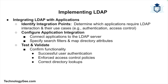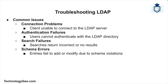After setting up the client, integrate LDAP with your applications. Determine which applications need to interact with the LDAP directory and how they will use the directory information — common use cases include user authentication, access control, and directory lookups. Configure the applications to use LDAP for the desired functions, typically involving connecting to the LDAP server, specifying search filters, and mapping directory attributes to application-specific fields. Then test and validate to ensure applications can successfully interact with the LDAP directory, verifying that users can authenticate, access control policies are enforced, and directory lookups return the correct information.